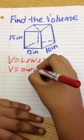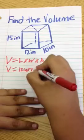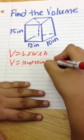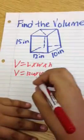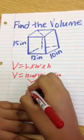12 inches, 10 inches, and 15 inches. Then you multiply 12 times 10. 12 times 10 equals 120.